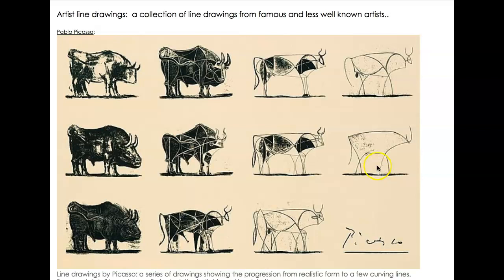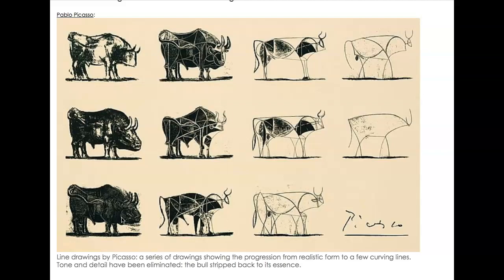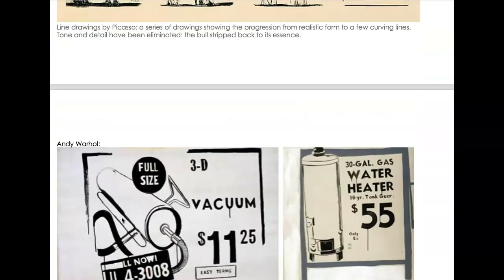Here we have a drawing from Pablo Picasso of a bull breaking down into several stages, beginning with something really simple and gestural depicting the animal's form in a very simplistic way, then gradually building up, adding more lines and tones, still keeping that cubist style, working all the way up to something much more realistic, yet still in his style.